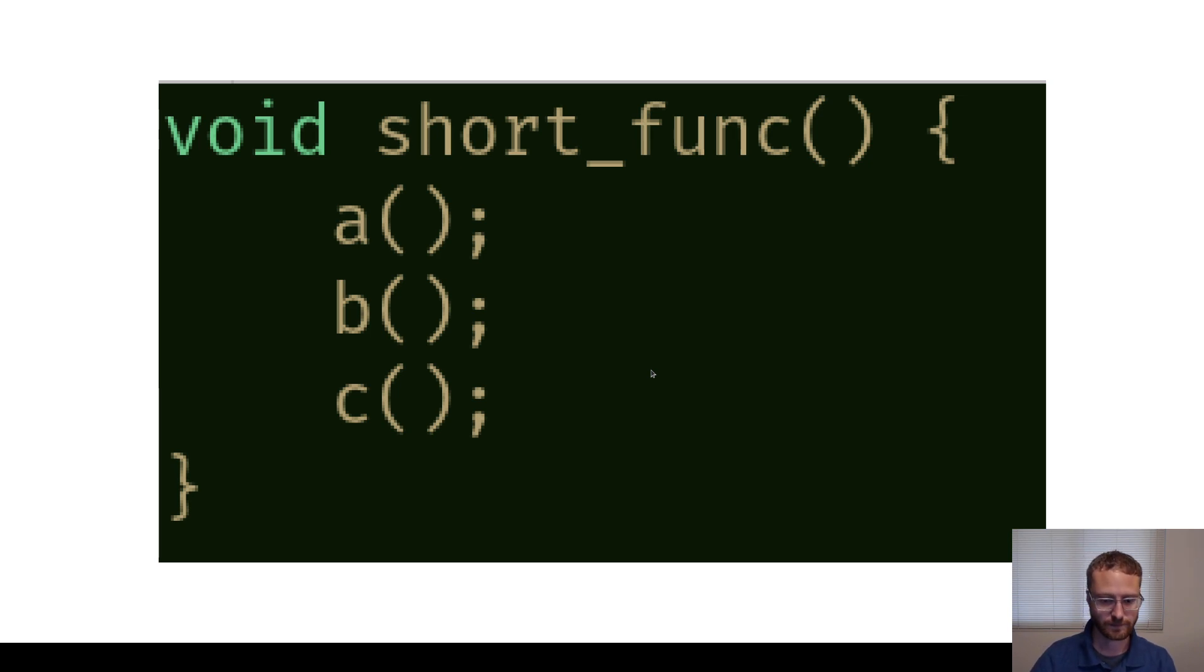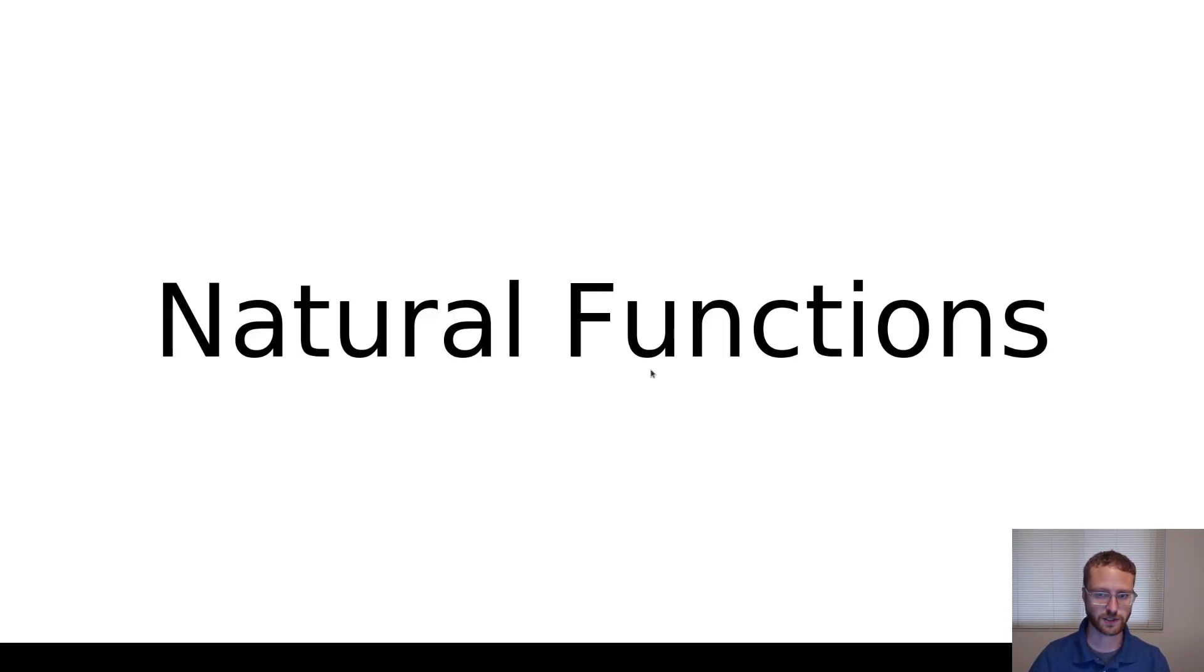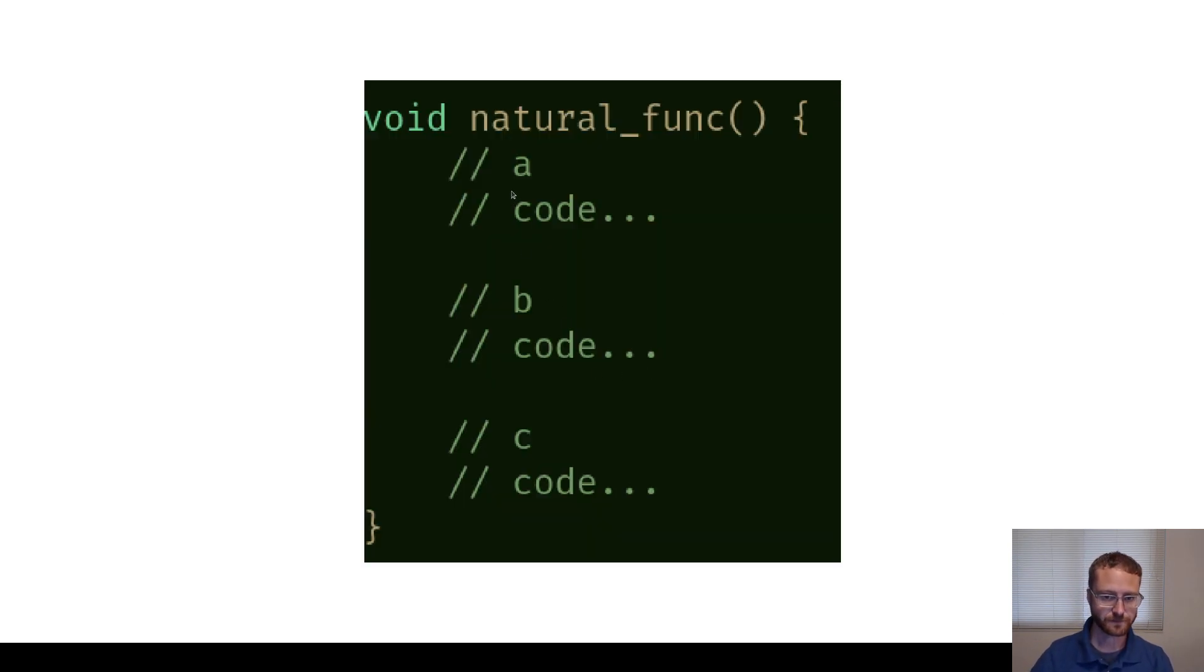So what's the other way? The other way of organizing functions is what I like to call natural functions. Natural functions can look something like this where it has the exact same code as in the previous example, except that all the code for A is inside our natural function. All the code for B is inside and C is inside.